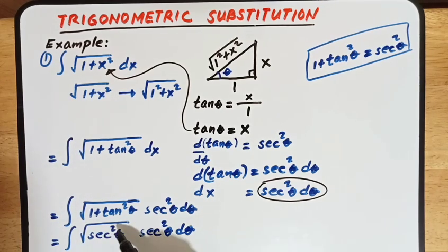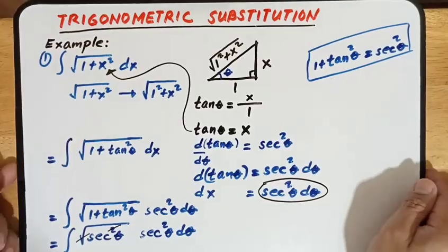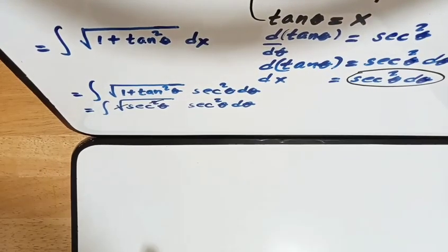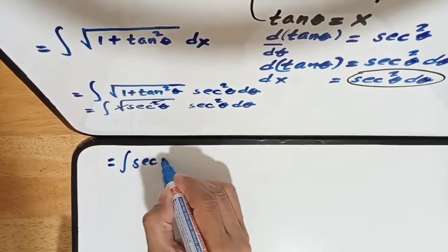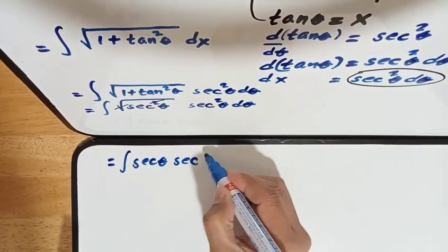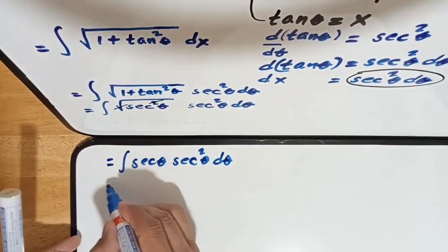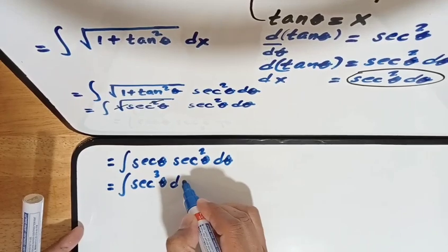We have a square root with index 2 and the exponent is also 2, so those cancel out. Our expression now becomes the integral of secant theta multiplied by secant squared theta d theta, which is equivalent to the integral of secant cubed theta d theta.